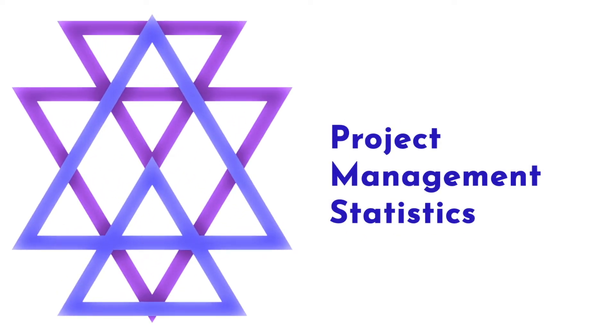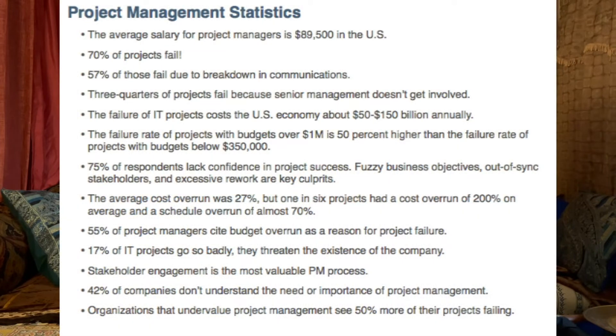Project management statistics. The average salary of a project manager is $89,500 in the United States. 70% of all software projects fail or never reach completion. 57% of those fail due to breakdown in communications. Three quarters of projects fail because senior management doesn't get involved. The failure of IT projects costs the US economy $50 billion to $150 billion every single year.